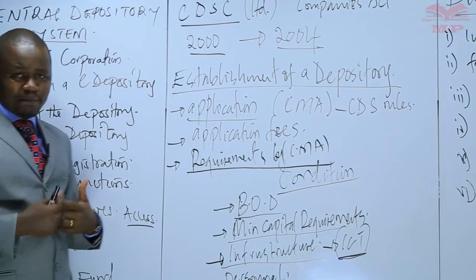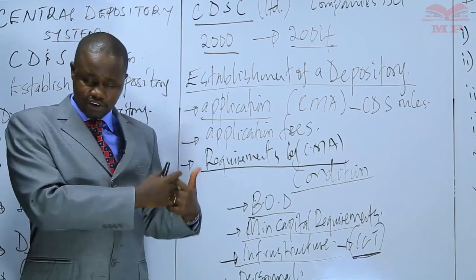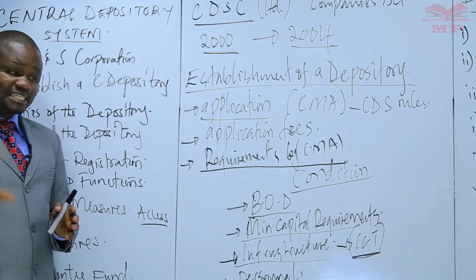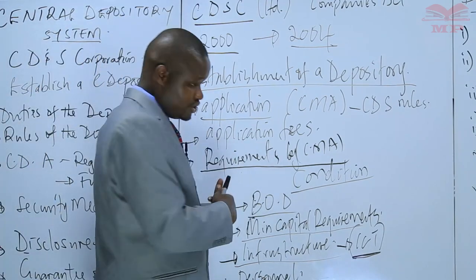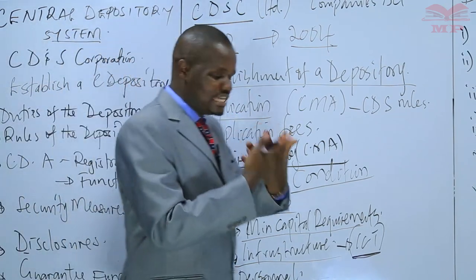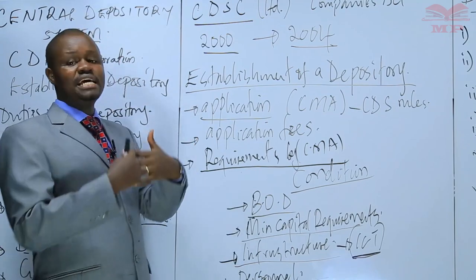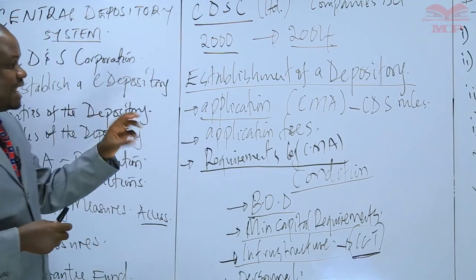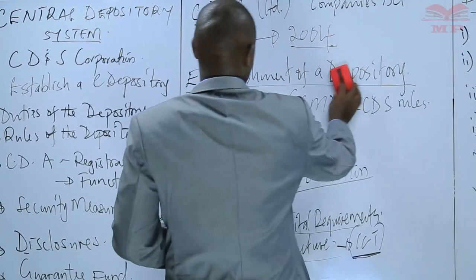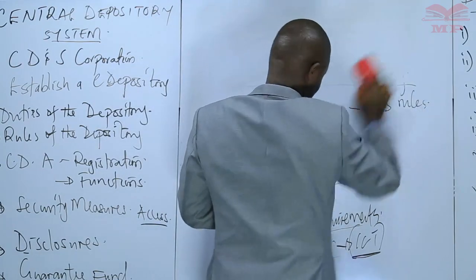These depositories, as a requirement by law, should have some rules — some regulations. Regulation has been a big issue as far as our capital markets are concerned: regulations are necessary for efficiency, transparency, and investor confidence. Once licensed as a depository, there is a requirement by the Capital Markets Authority that you must have rules by which the central depository agents are going to play by. These rules are going to define the relationship between the central depository and any agents they may register to handle investors on their behalf.